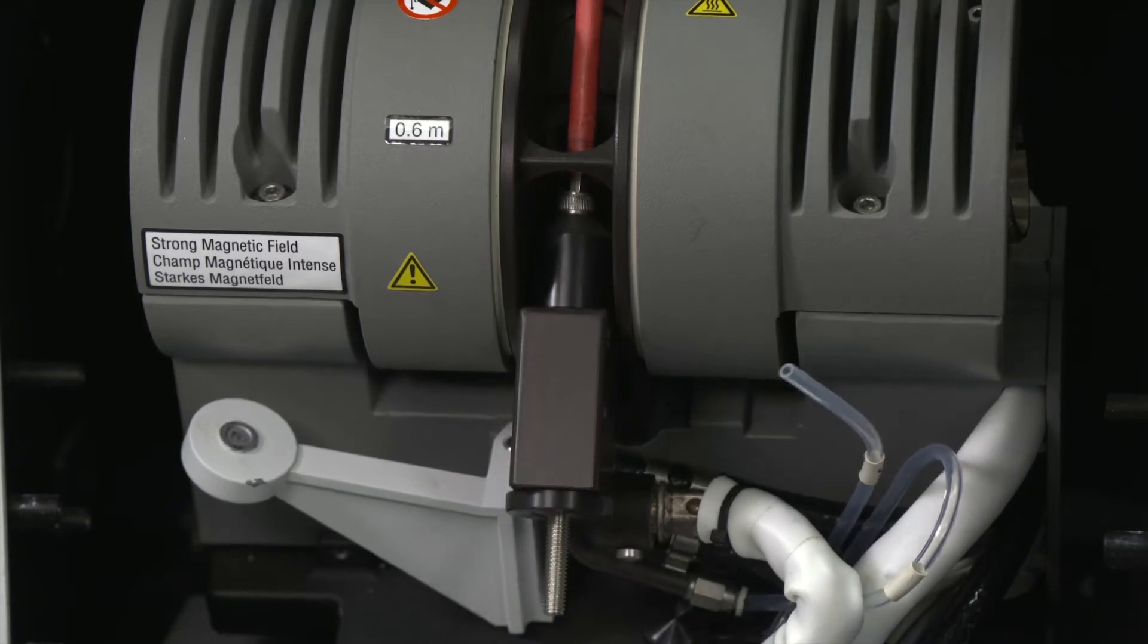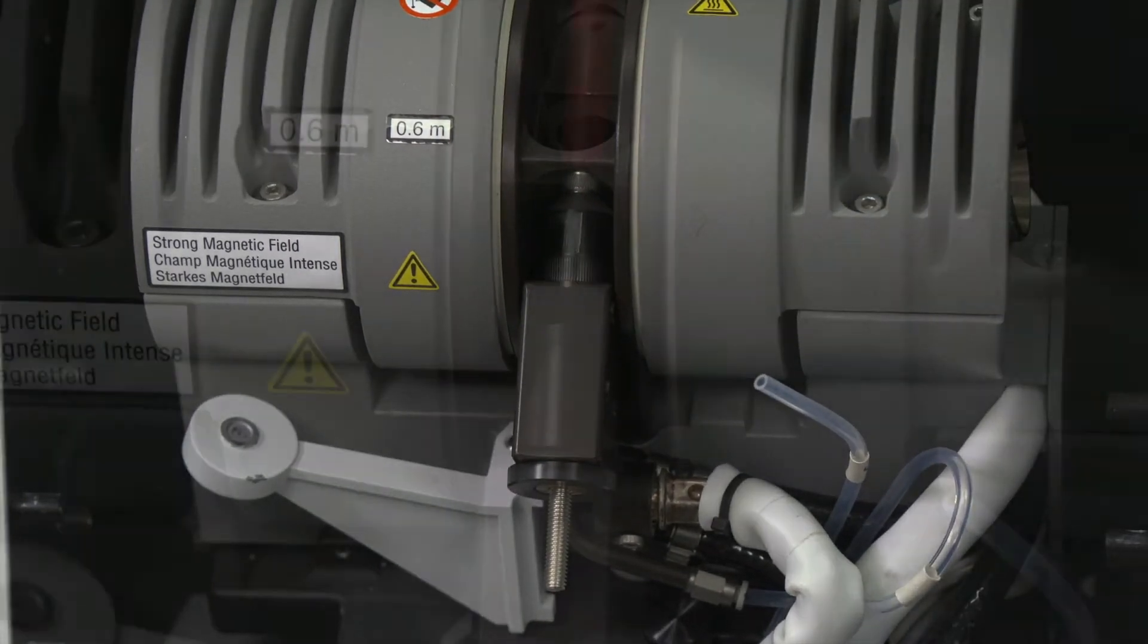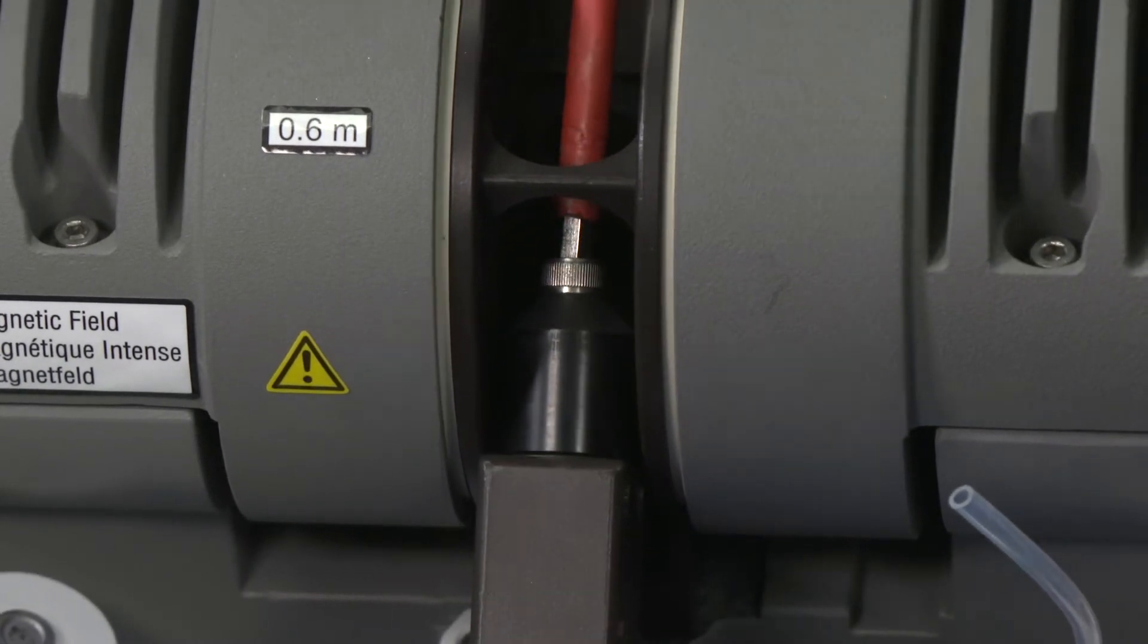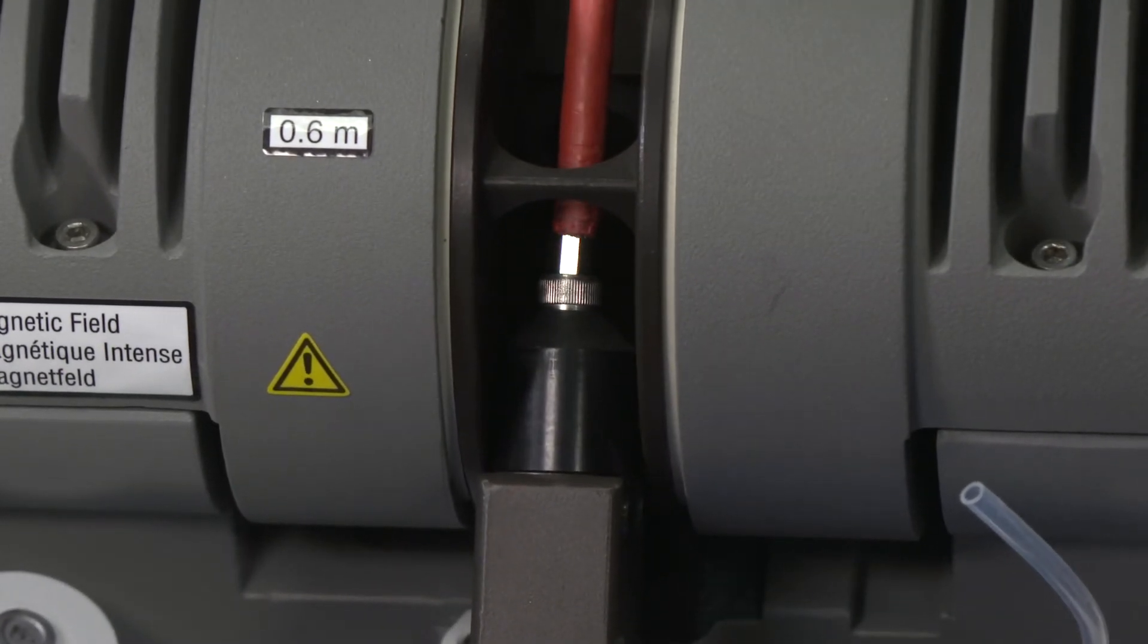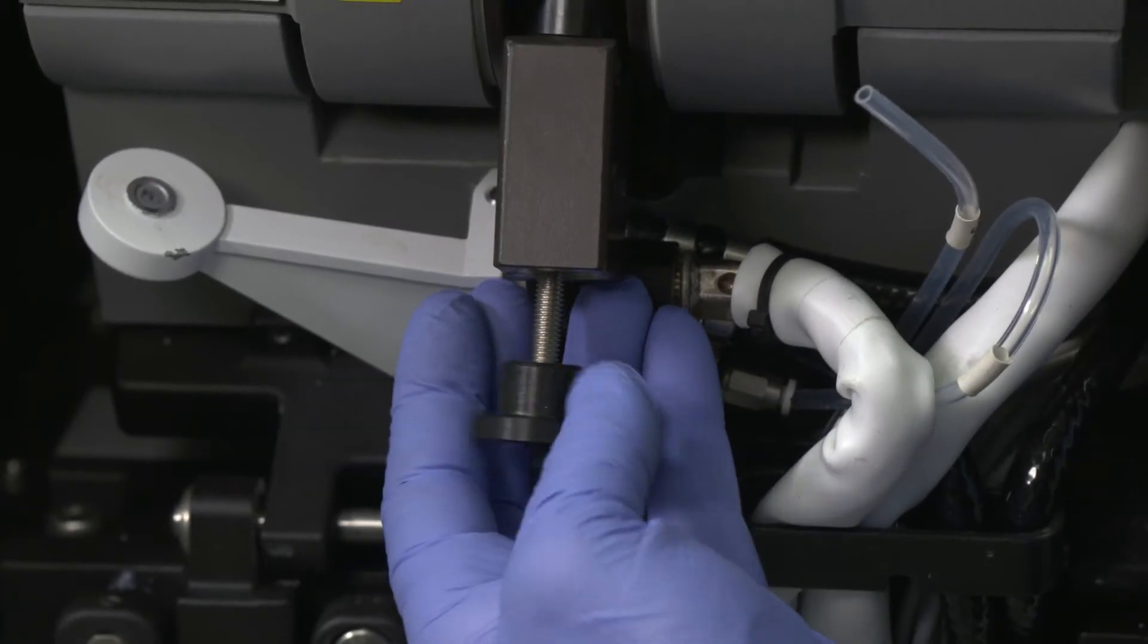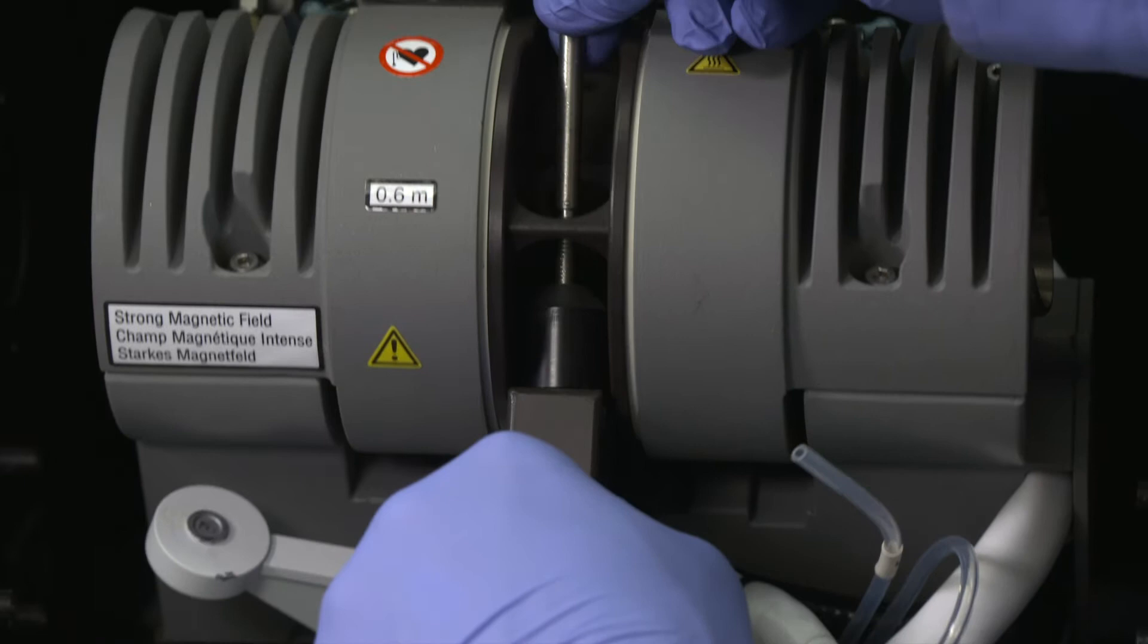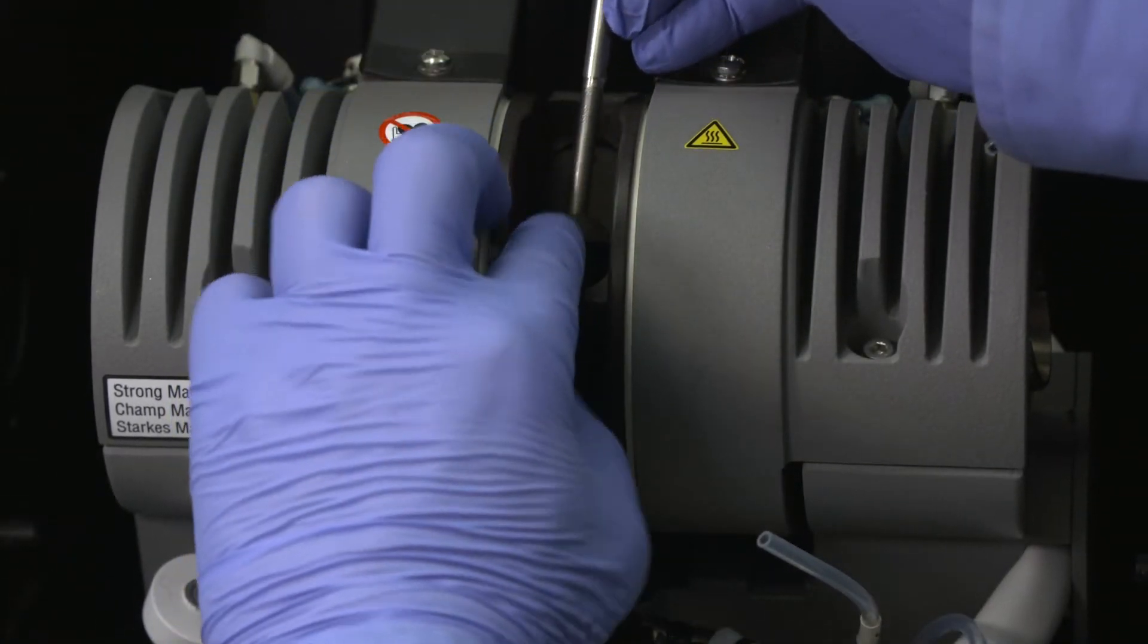Do not use excessive force to push the contact into the housing, as this may shatter the contact. If there is substantial resistance, check that the parts are aligned correctly. Screw the bolt out of the threaded cylinder and carefully remove the tools. Do not scratch the contact when you remove the tools.